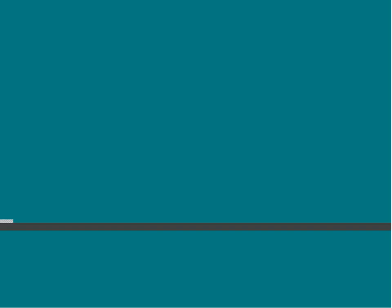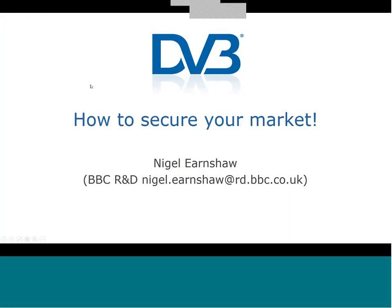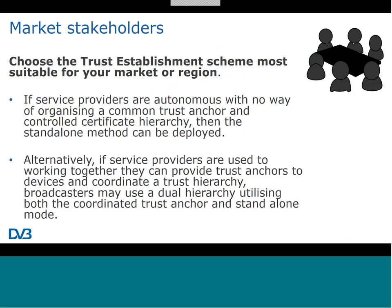This final section takes a higher-level view and asks how we apply the specification to a wider market. Different markets have different requirements, and market stakeholders need to understand the characteristics of their particular market. If service providers are autonomous with no way of organizing a common trust anchor, then the standalone method will be prevalent. Alternatively, other markets may have service providers accustomed to working together, making it possible to provide trust anchors and a coordinated trust hierarchy, in which case the dual hierarchy key validation system Nick described may be used.